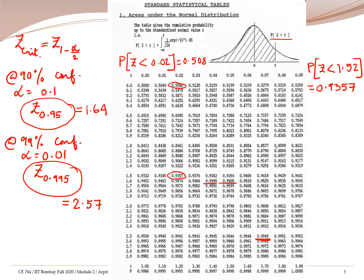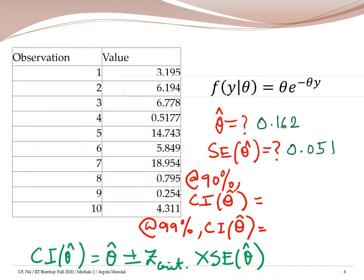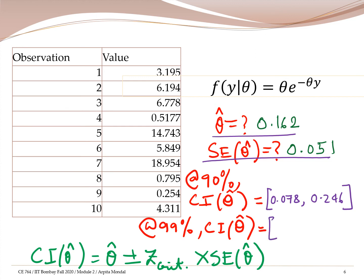We now have all the information needed: theta hat, its standard error, the confidence interval formula, and the Z critical values from the standard normal table. Plugging everything in, we get the confidence interval at 90% confidence as [0.078, 0.246], and at 99% confidence as [0.03, 0.29]. So these are our confidence intervals.